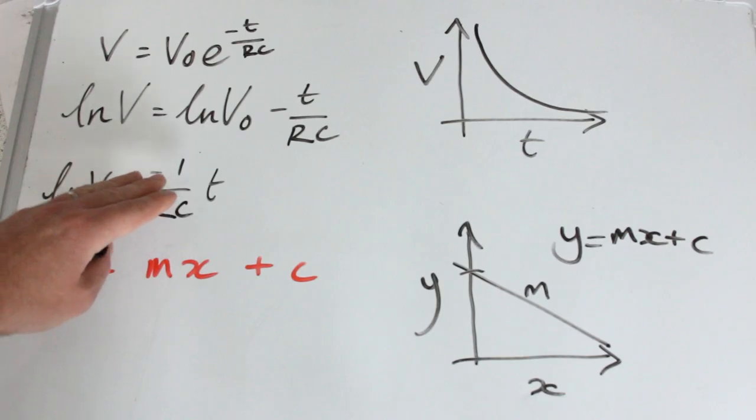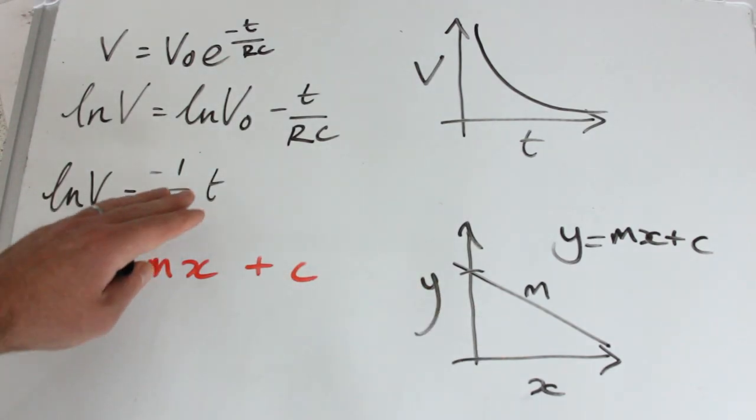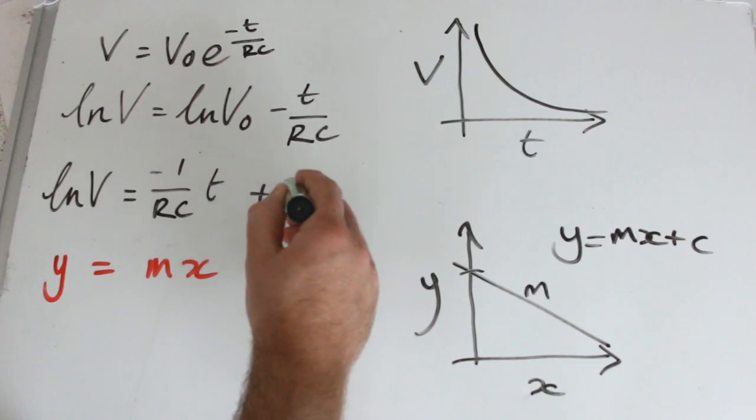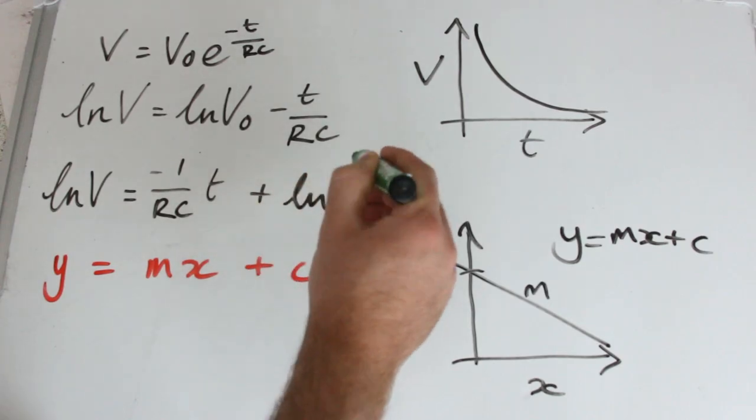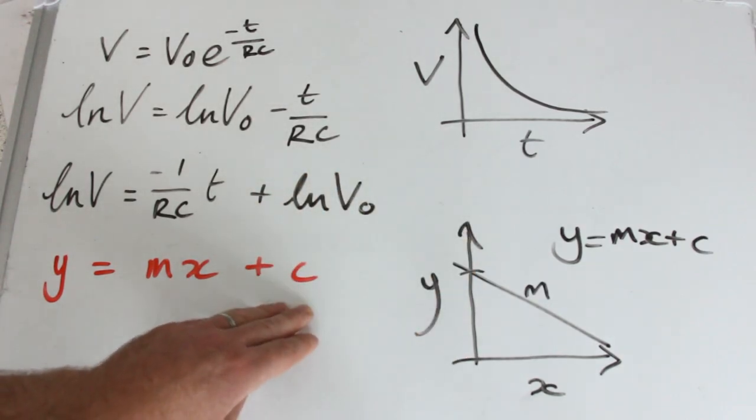Okay, so that is our gradient of the graph we're going to plot. And therefore, plus ln V0 is our C or our Y intercept.